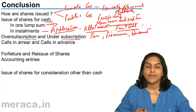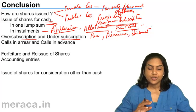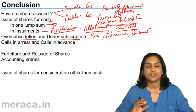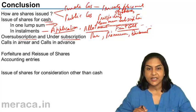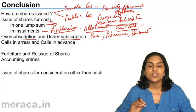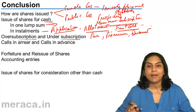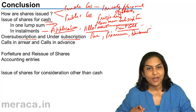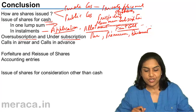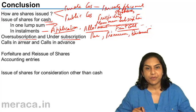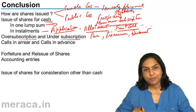Interest on calls in arrears may be charged by the company, and interest on calls in advance must be paid by the company. If the articles of association do not specify the rate of interest for either, the provisions of Table A will apply. According to Table A, the maximum rate of interest for calls in arrears is 5% per annum and for calls in advance is 6% per annum.